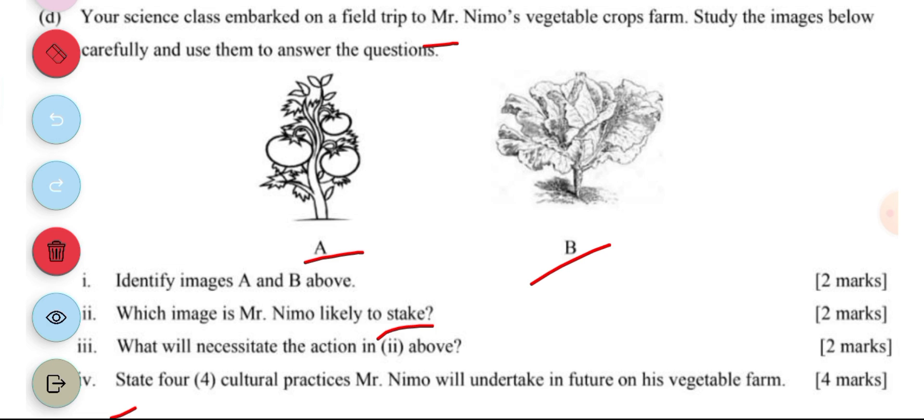Part three asks: what will necessitate the action in part two above? Tomato has a weak stem, so in order to support the weak stem so that the plant leaves can receive more sunlight.